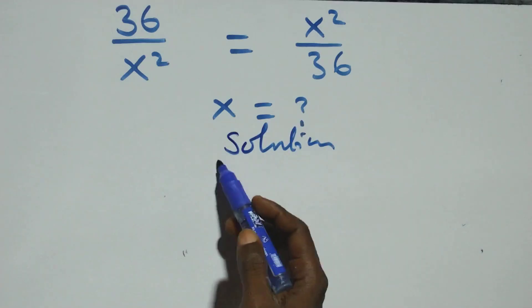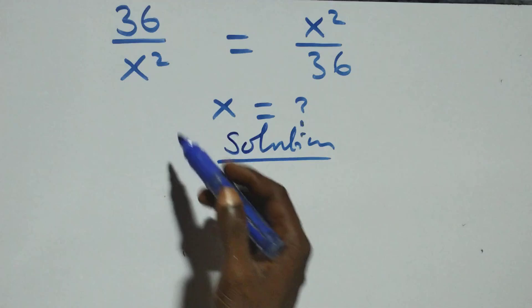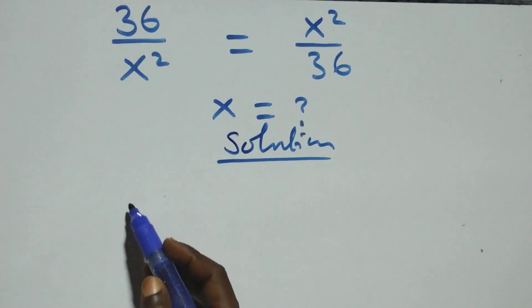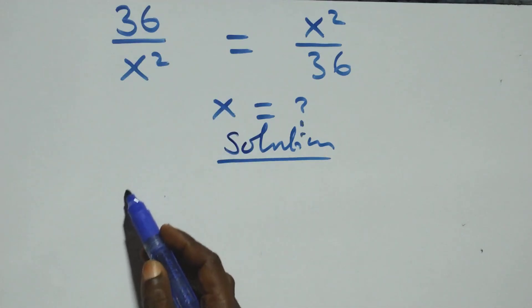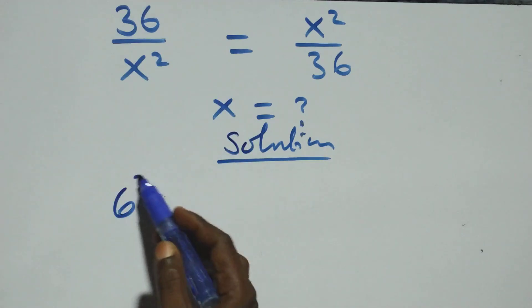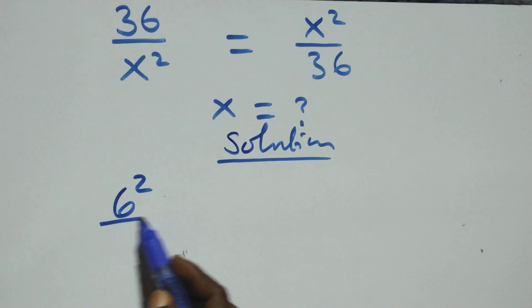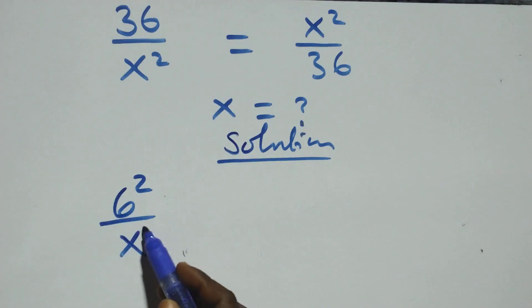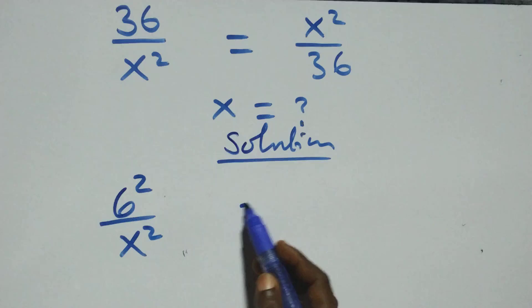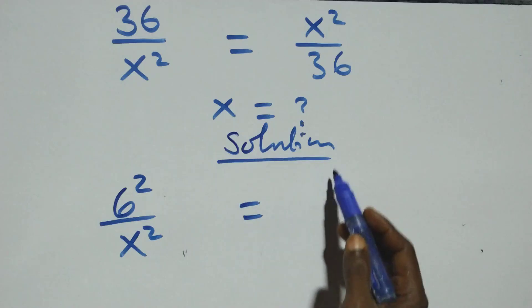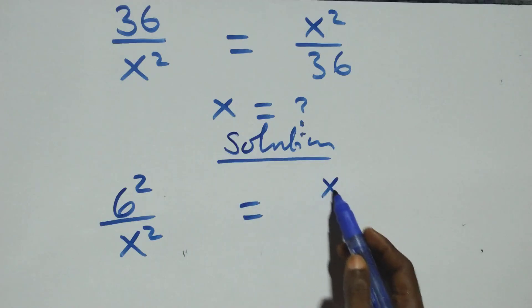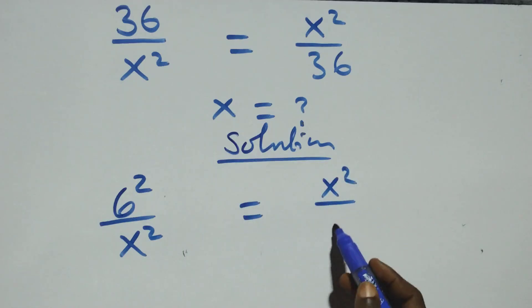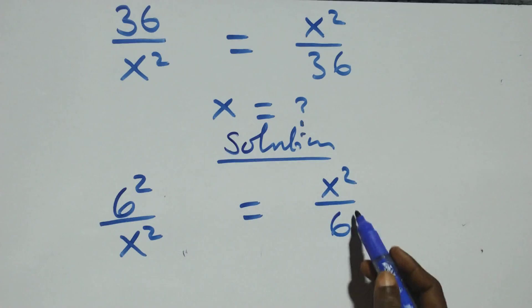What we have here: we can write 36 as 6 squared, then over here we have x squared, then equals to here we have x squared over 6 squared.